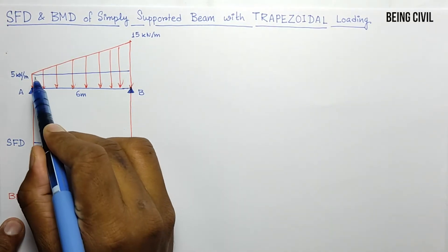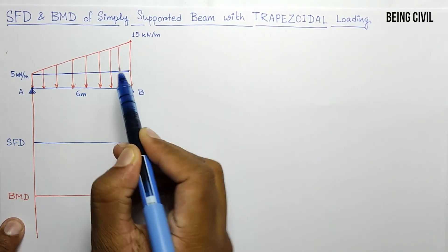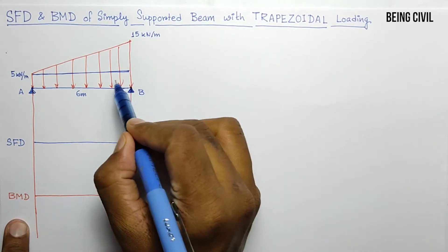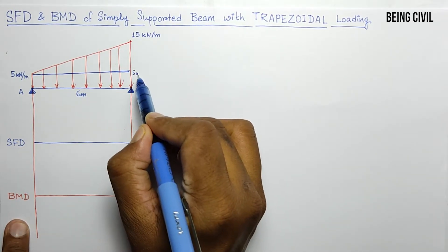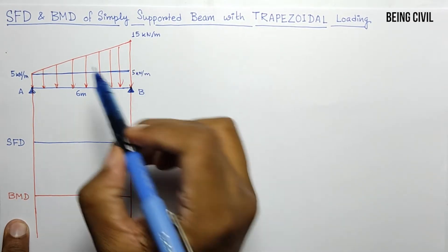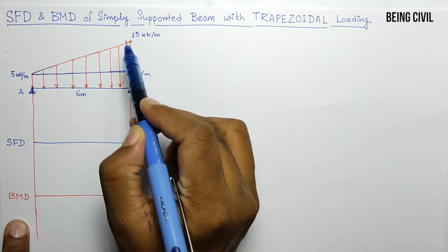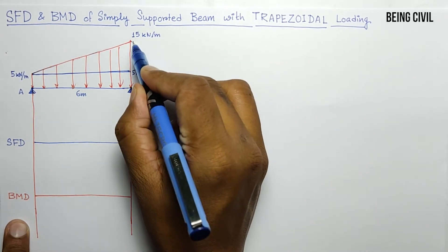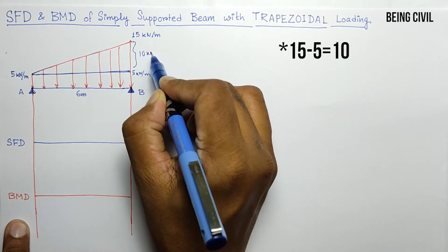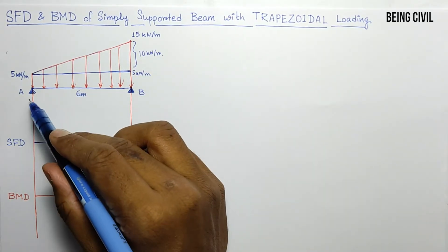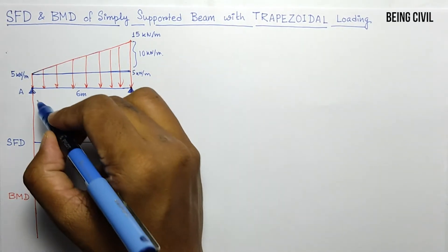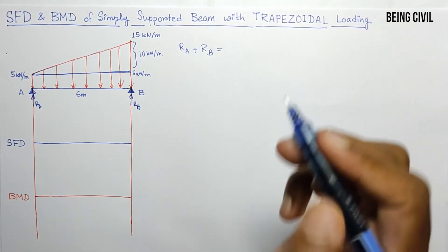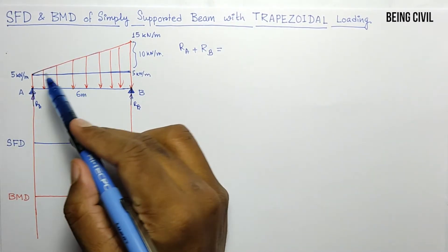One part is the rectangle and the other is the triangle. This gives a UDL of intensity 5 kN/m plus a uniformly varying load of intensity 0 at one end and 10 kN/m at the other end. Now let us find Ra and Rb. Ra plus Rb equals the total load.